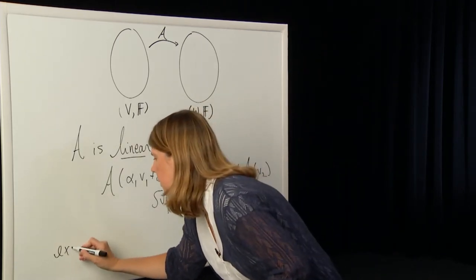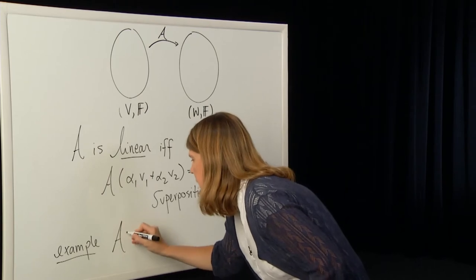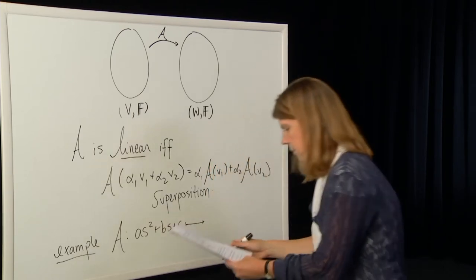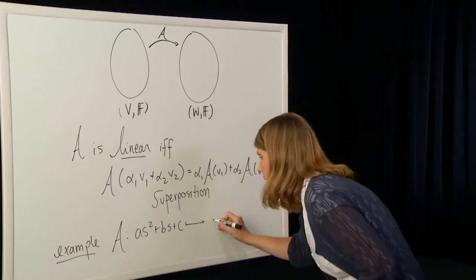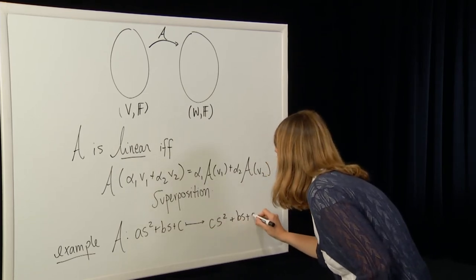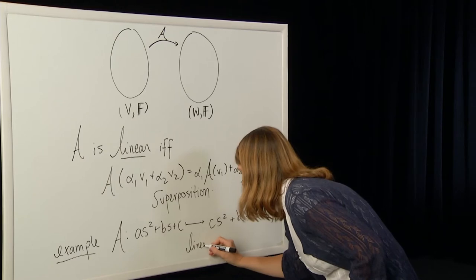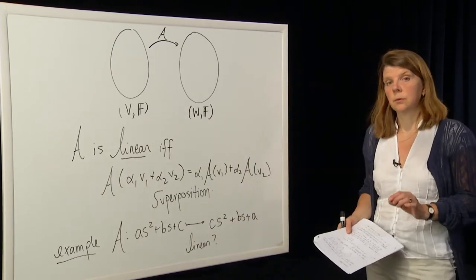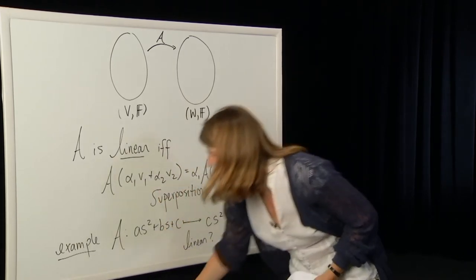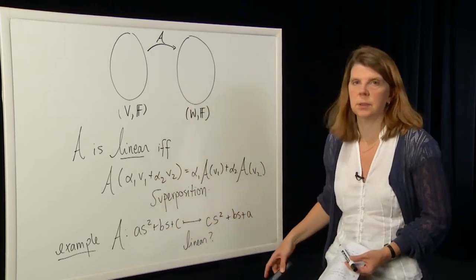Let's start with an example. Suppose you're given a map A defined as follows: it takes polynomials As² + Bs + C and maps them to Cs² + Bs + A — all I've done is switch the first and last coefficients. The question is: is this a linear map? The answer is yes, but to support that, we need to show that the superposition property holds for this map on the space of polynomials.